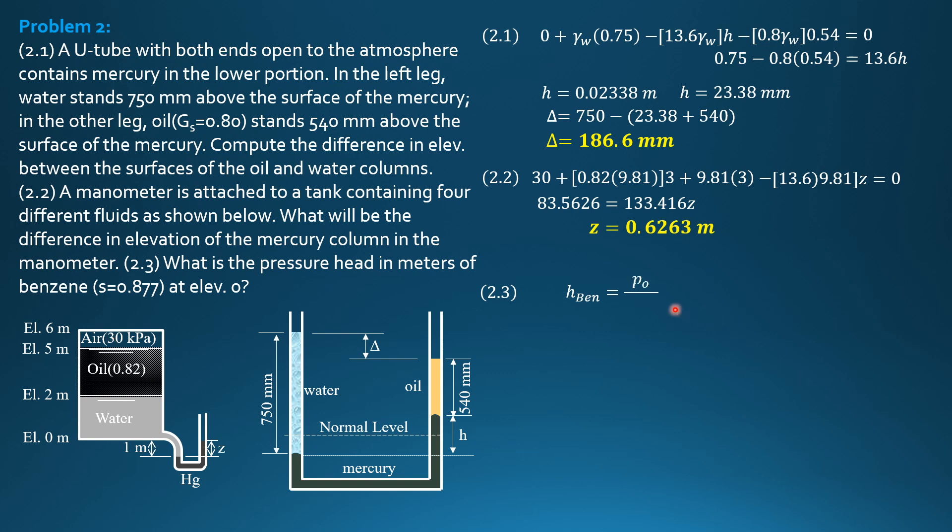So Hb, benzene is pressure at elevation zero divided by gamma of benzene. Specific weight of benzene is specific gravity times specific weight of water, 9.81.